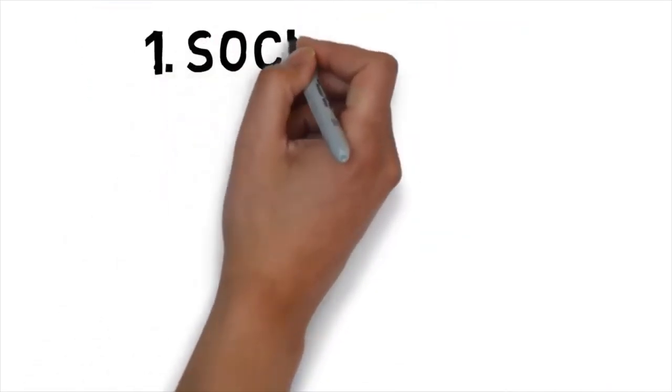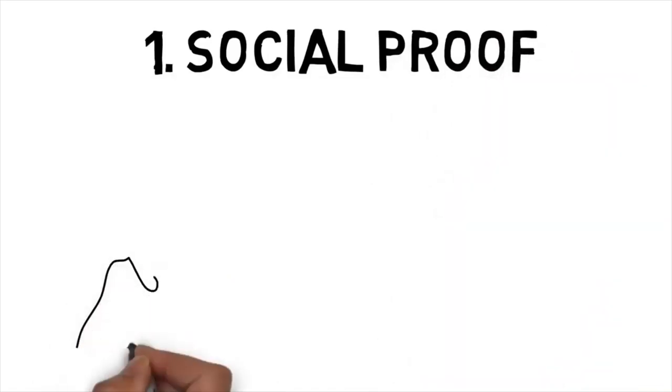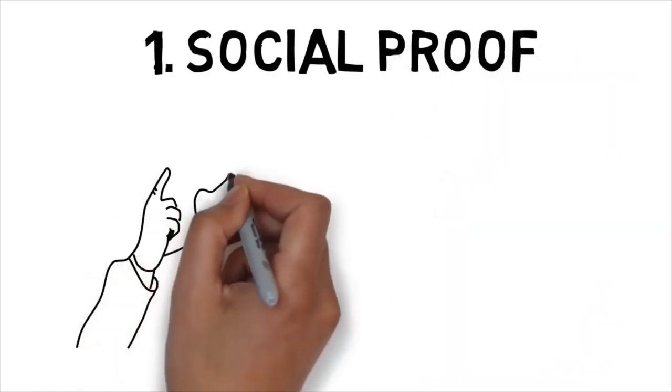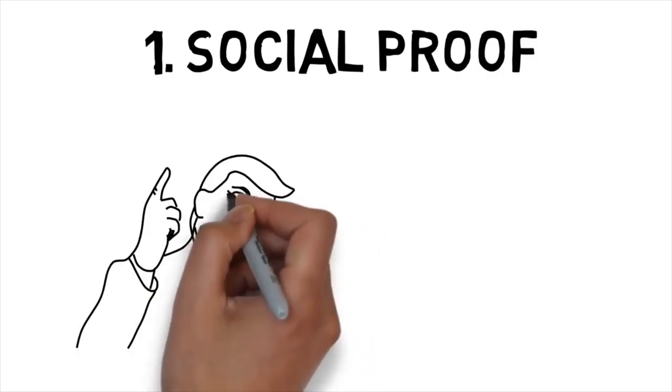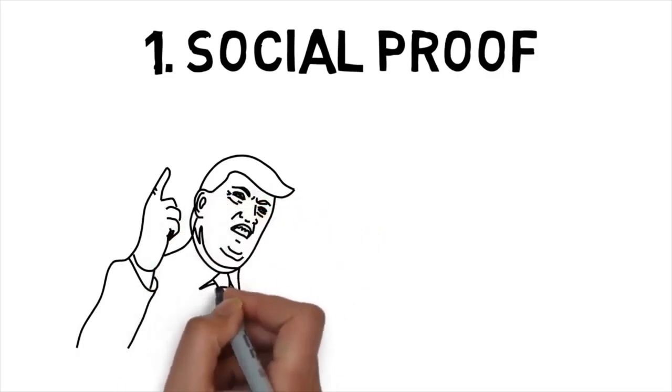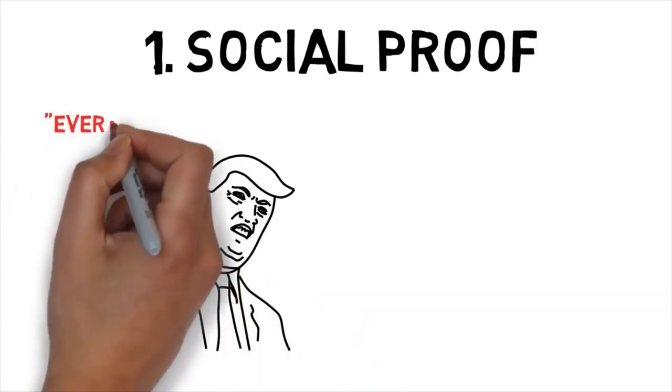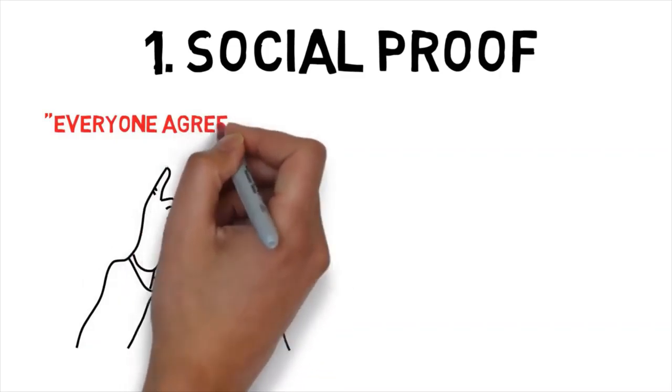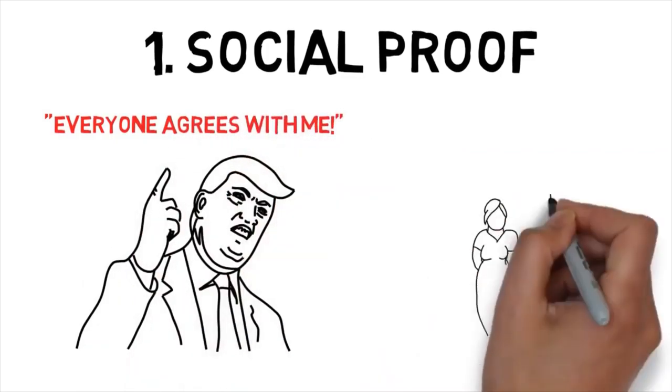Number 1. Social Proof. One of the most powerful tools to persuade other people is called social proof. Social proof is when you support an argument by saying that everyone else supports it too. For example, Donald Trump often defends himself by saying things like, everyone agrees with me. It doesn't matter what your politics are for you to realize that he's using a psychology trick. And it actually works very well.